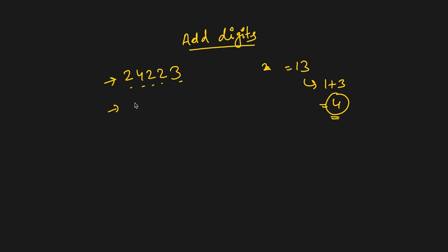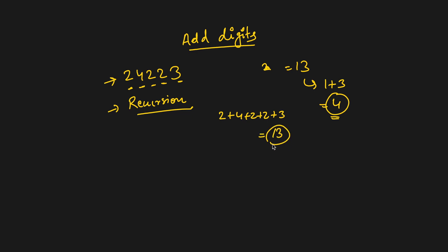In this solution we are going to use recursion, and we can easily modify this to have an iterative approach. In our recursive function, we will add all the digits. Whatever is the outcome, we will make a recursive call and pass that result. The base case for the recursive function would be: if the number is less than 10, return the number.